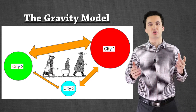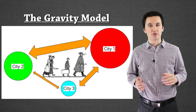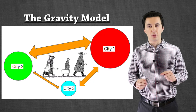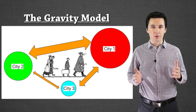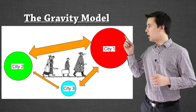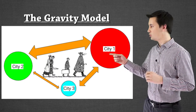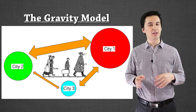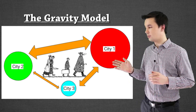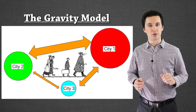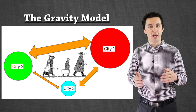On screen you can see an illustration of the gravity model. There are three different circles representing cities — the size of each circle corresponds to population size. Arrows going between the circles show the interaction between them; the larger the arrow, the more they interact. Circles one and two are larger and interact more with each other. Circles two and three don't interact as much, even though they're closer, because circle three is smaller. However, circle three is closer to the large circle one and so they interact more frequently than circles three and two.